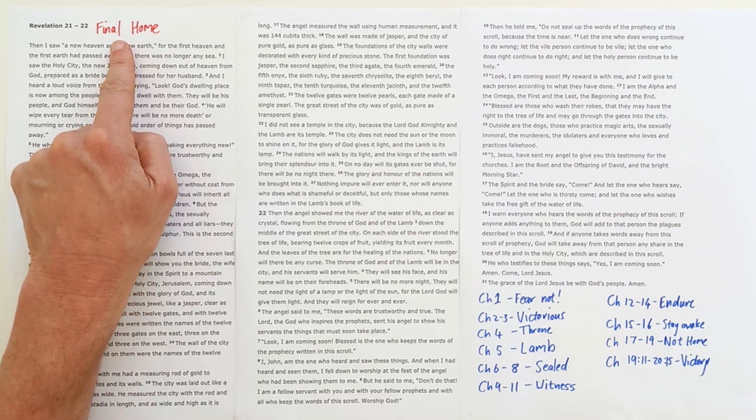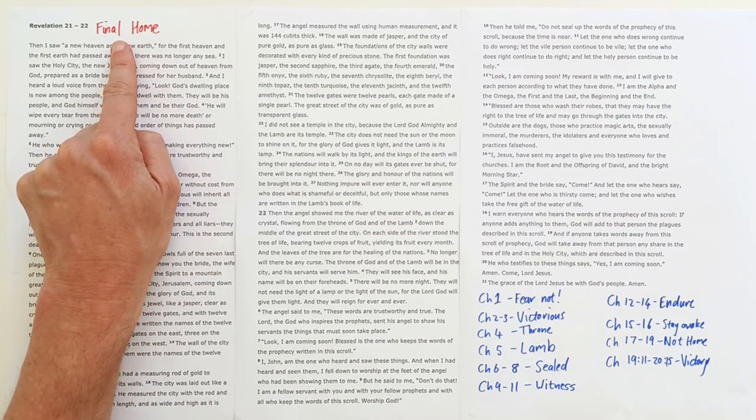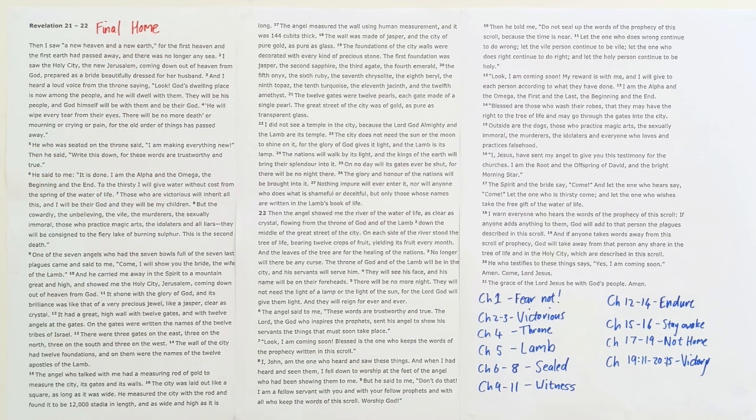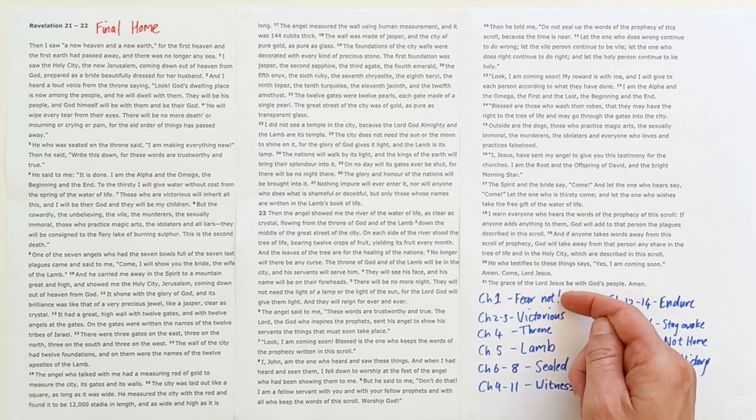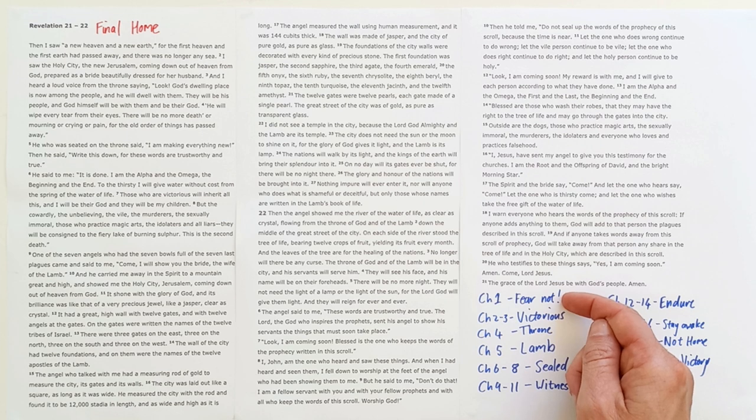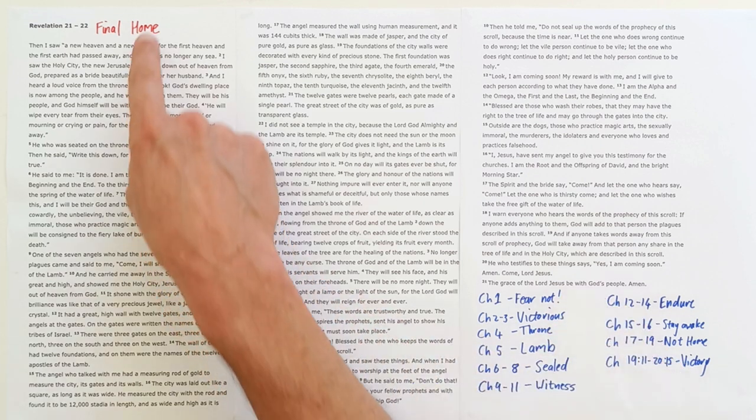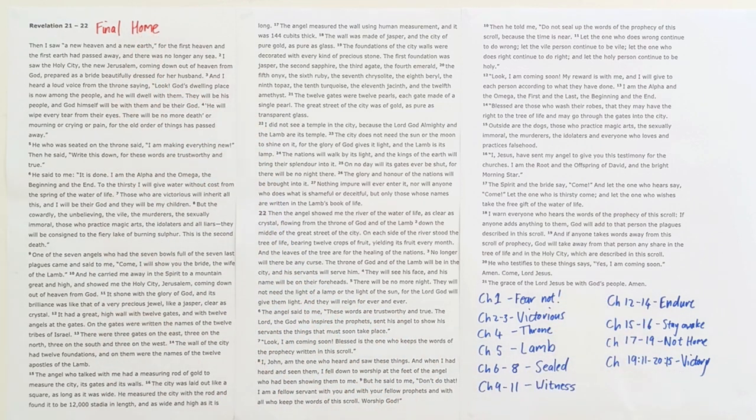Because the Lamb is victorious, he wants us to make it to our final home victorious. He has reminded us throughout this book that this is not home, so we need to stay awake and endure in our witness as those who have been sealed by the blood of the Lamb. The Lamb on the throne is victorious. We can hear him say fear not, he will get us to the glorious end victorious.